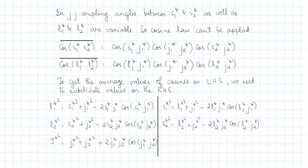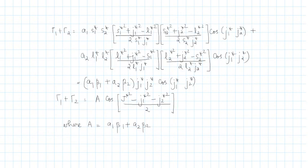We plug in values for cosines of s1*j1*, s2*j2*, l1*j1*, and l2*j2*. For the term cosine j1*j2*, we are not going for a substitution at this stage. Writing gamma1 plus gamma2 gives us the combined expression.